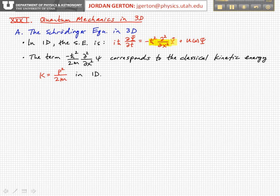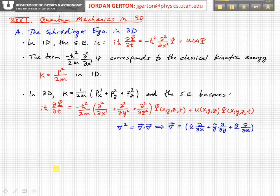k equals p squared over 2m in one dimension. And in three dimensions, we can generalize that, and we say that the kinetic energy is then given by p squared over 2m, where p squared is now px squared plus py squared plus pz squared. So it's the sum of the squares of the components in the three spatial directions. And with that generalization,